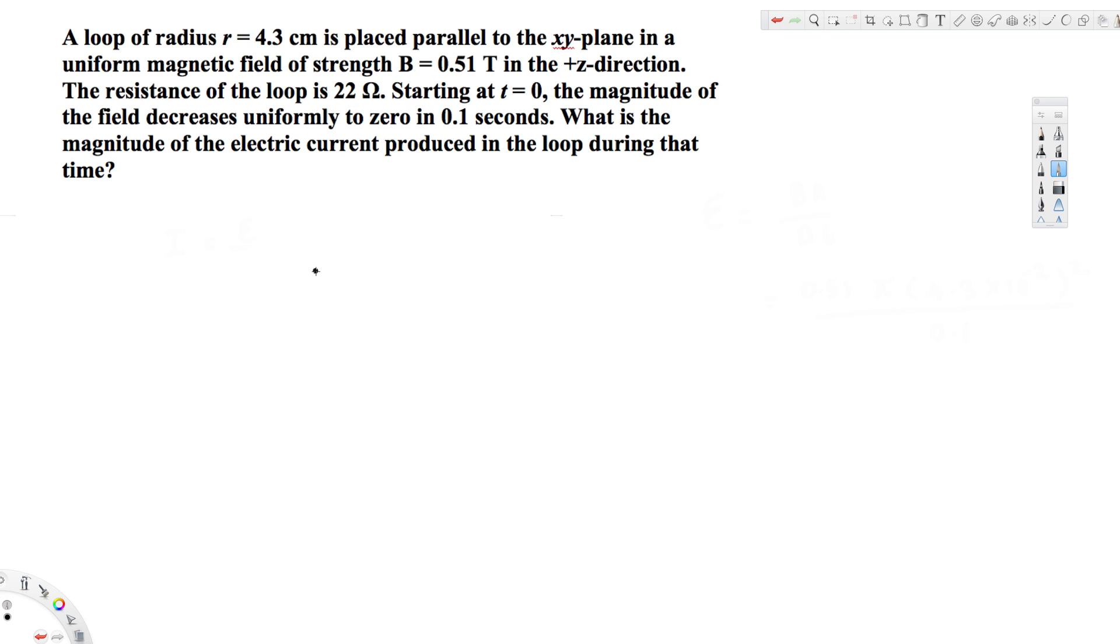Let's look at this problem. The question asks: A loop of radius r = 4.3 centimeters is placed parallel to the xy-plane in a uniform magnetic field of strength B